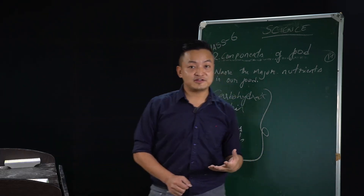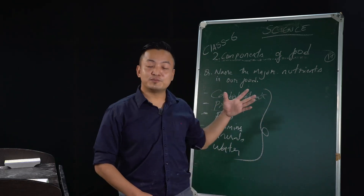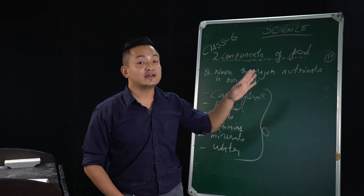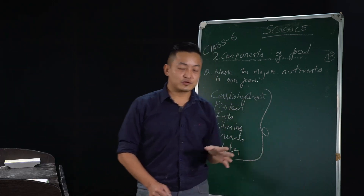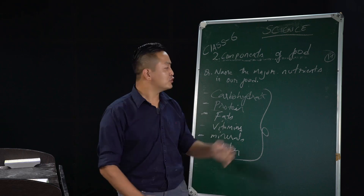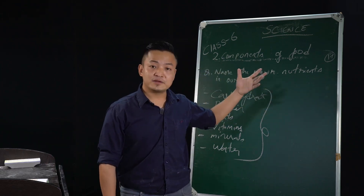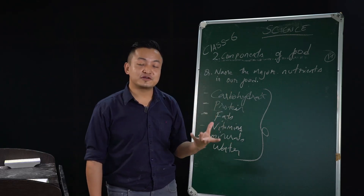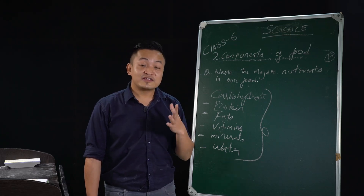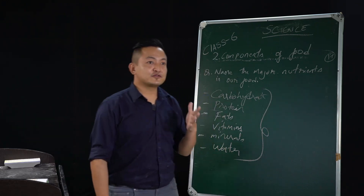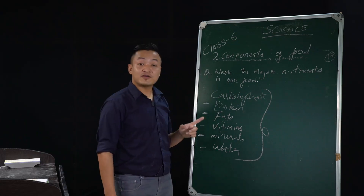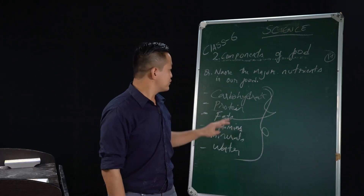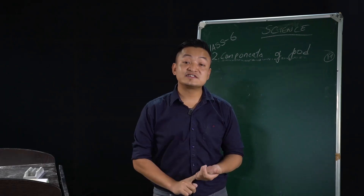Now we have a very interesting topic. You know the importance of all these nutrients — without any single nutrient in your diet, it can be harmful in the long run. We know that sugar, starch, apple, papaya, and mango are some sources of carbohydrates. But how do you know that certain foods contain carbohydrates, proteins, and fats? We have a simple test we can perform. In the textbook they have mentioned three tests to detect whether food contains carbohydrates, proteins, or fats.